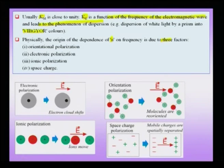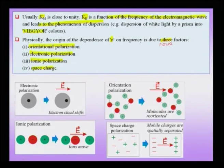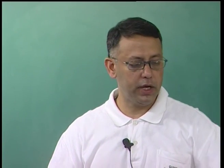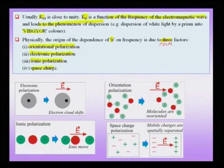These four polarizations are responsible for the frequency dependence of n. These polarizations are activated at selective frequency regimes — they are not active at all frequency regimes — and therefore there is a dependence of the refractive index on the frequency of the electromagnetic wave.